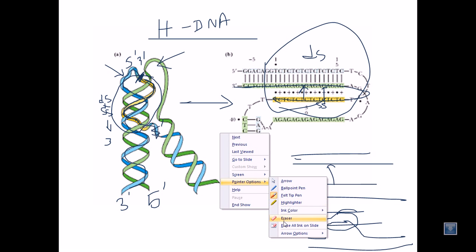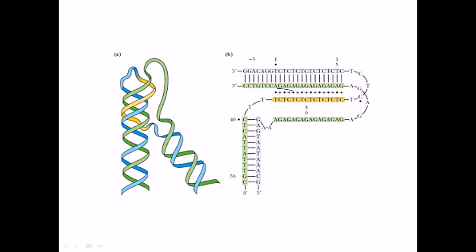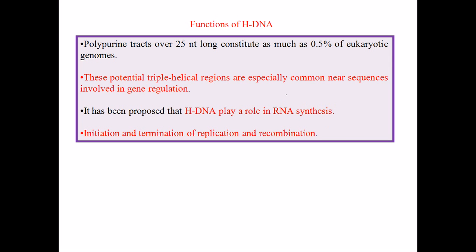A fourth requirement is that polypurine residues are needed — AG AG AG AG on one side with polypyrimidine residues on the opposite strand — to interact and make this structure. Without polypurine and polypyrimidine sequences, this kind of DNA cannot be formed. These potential triple helical regions are especially common near sequences involved in gene regulation. It has been proposed that H-DNA plays a role in RNA synthesis, though much more research is needed.